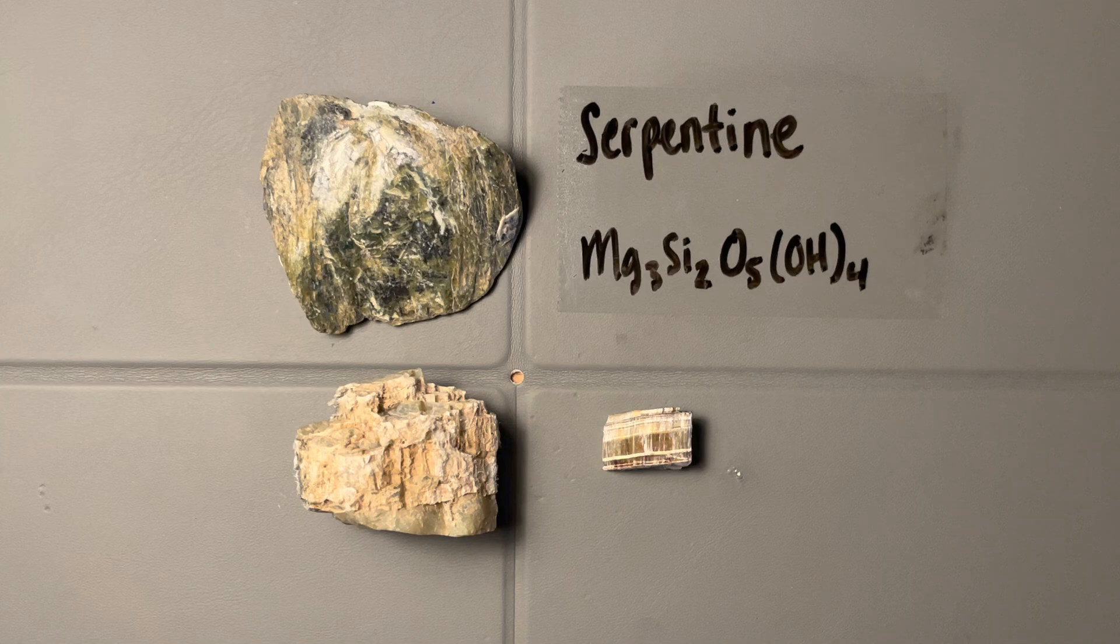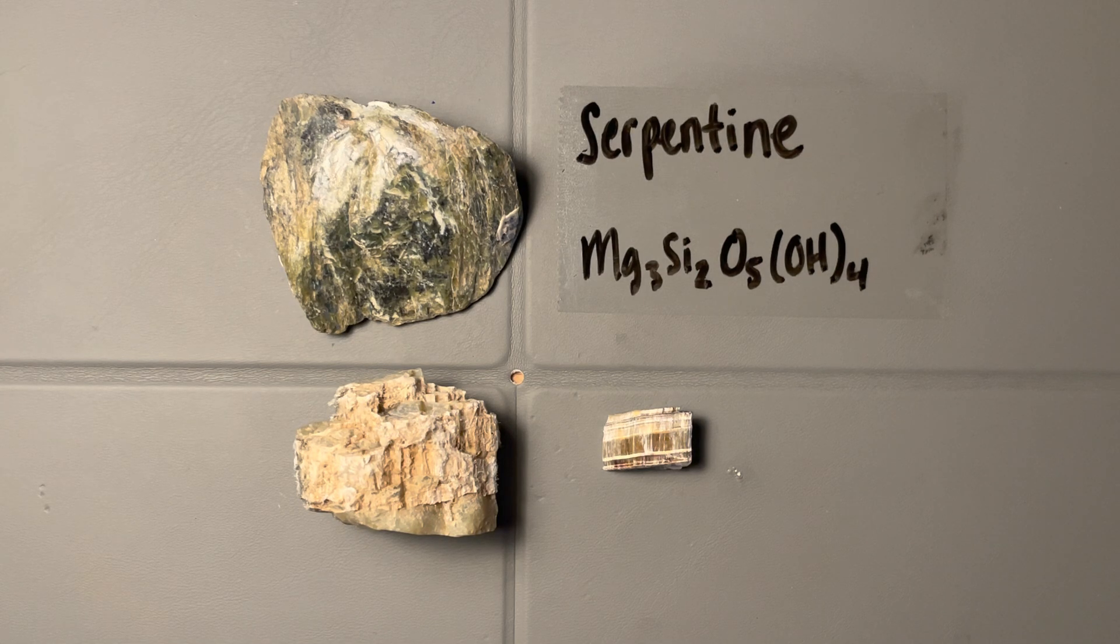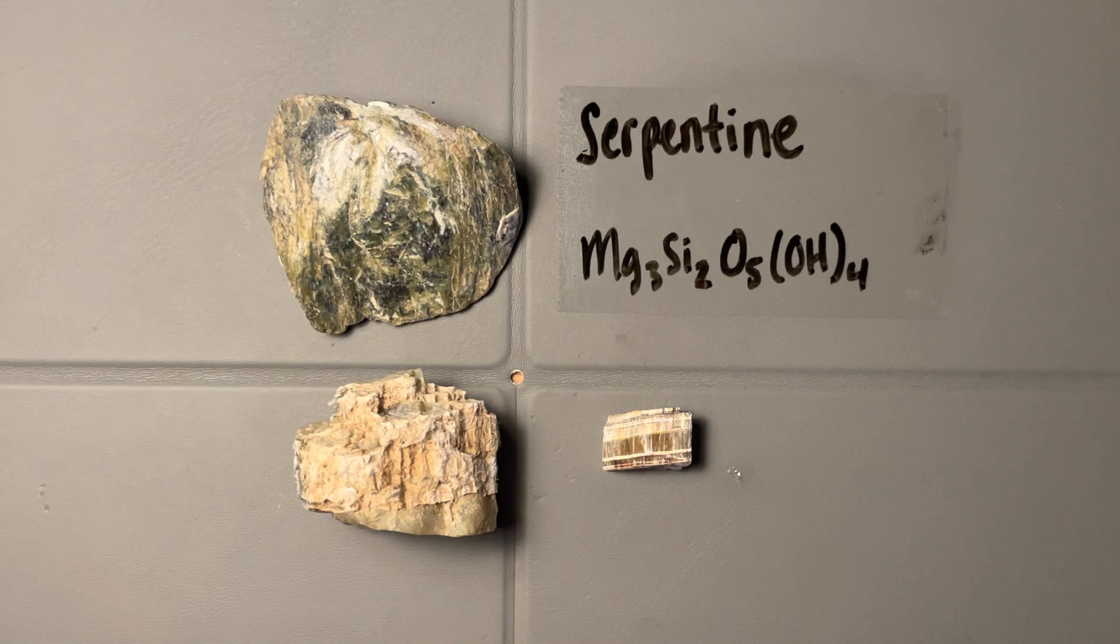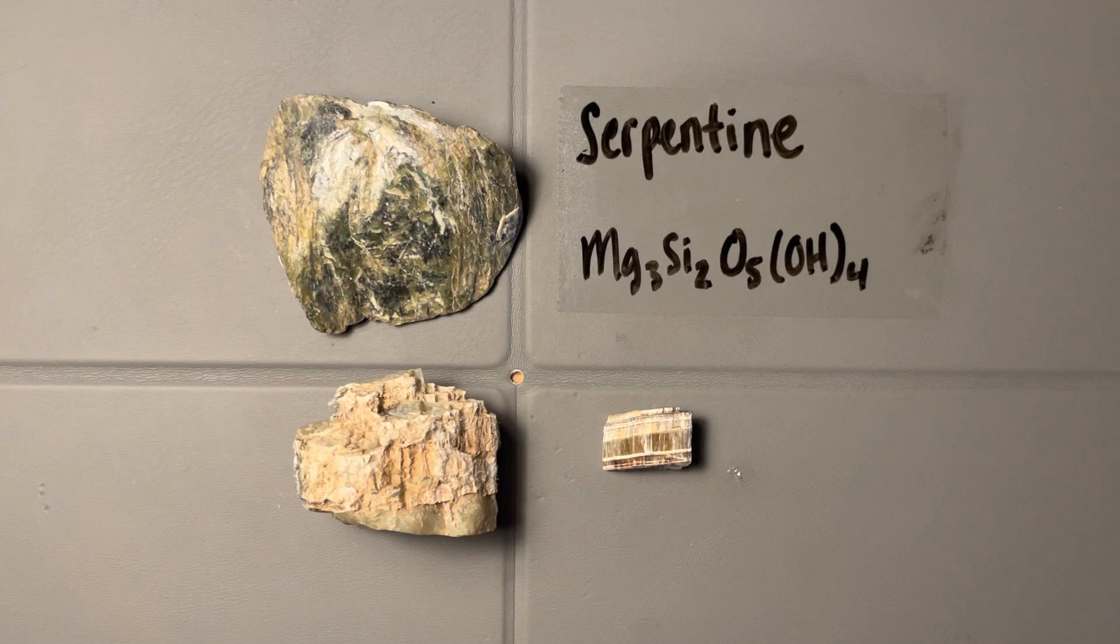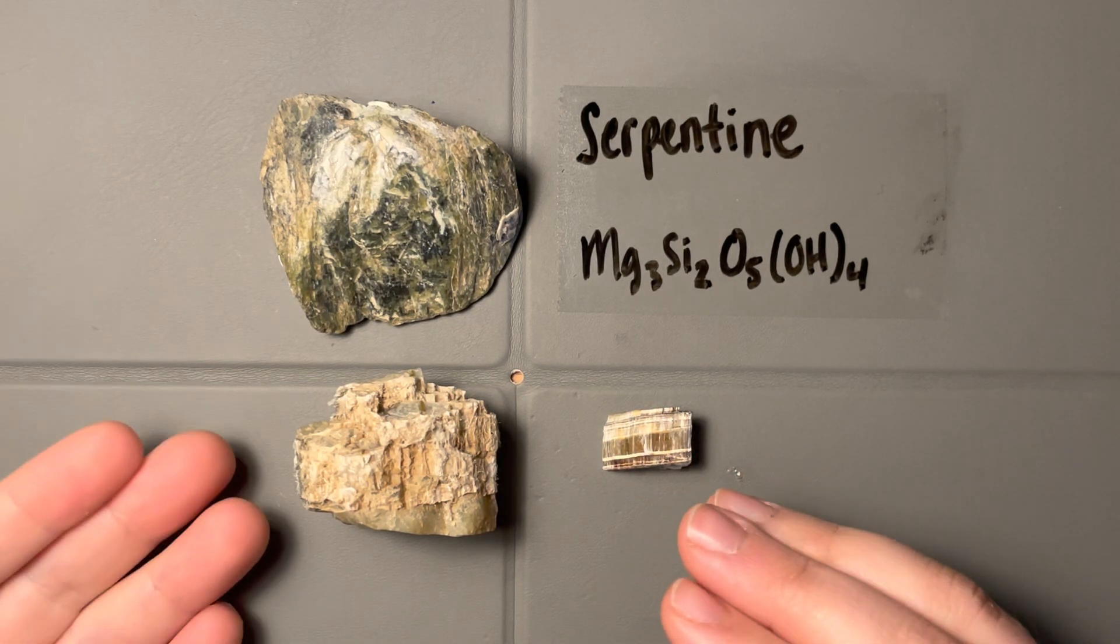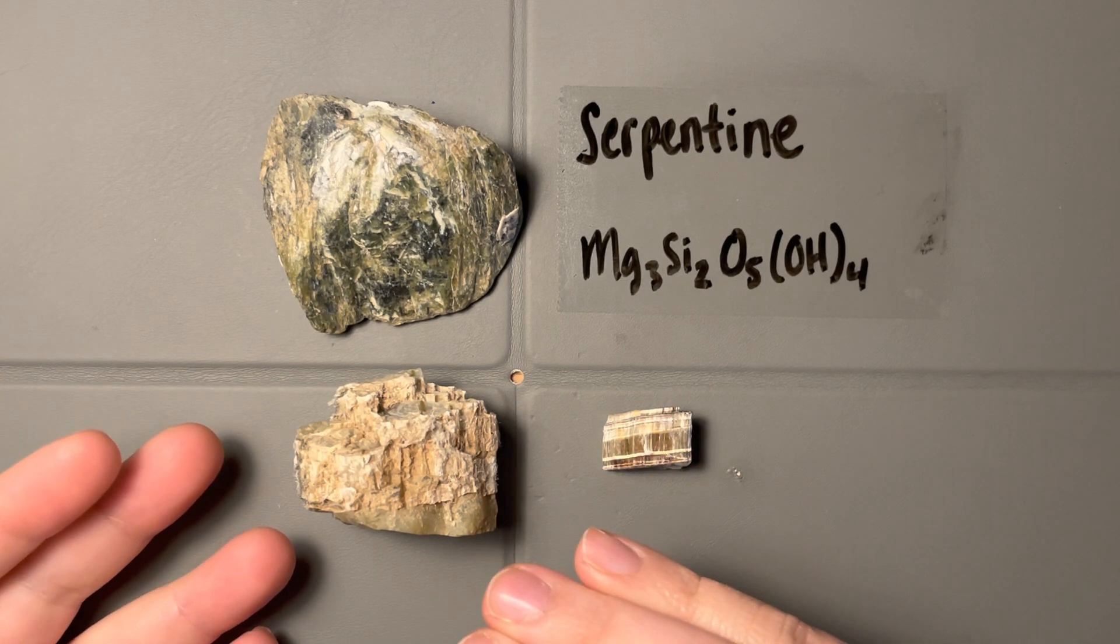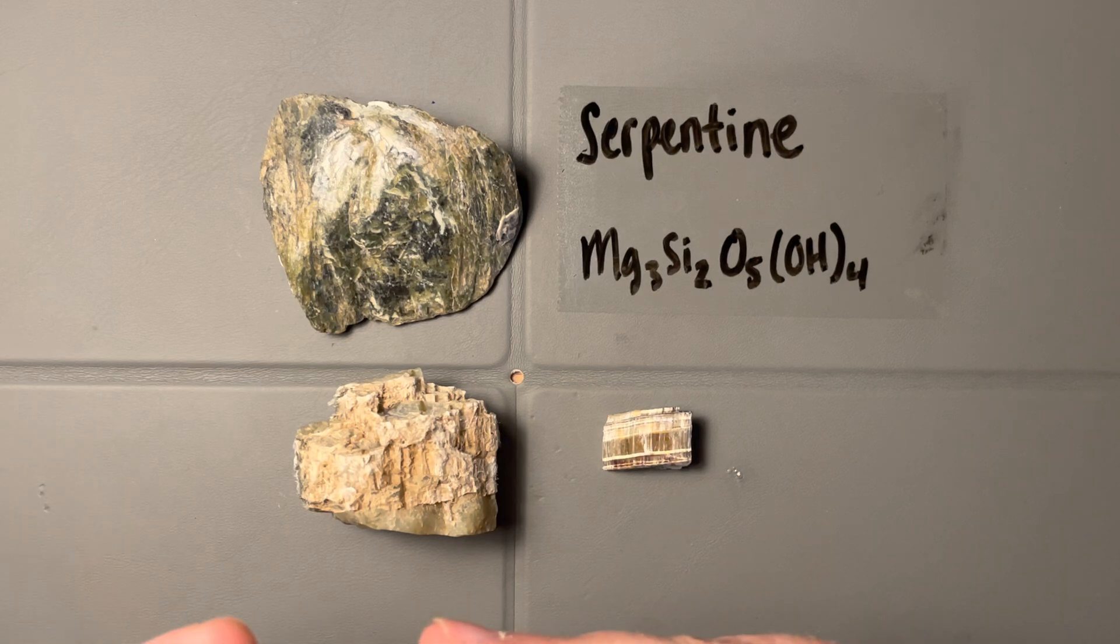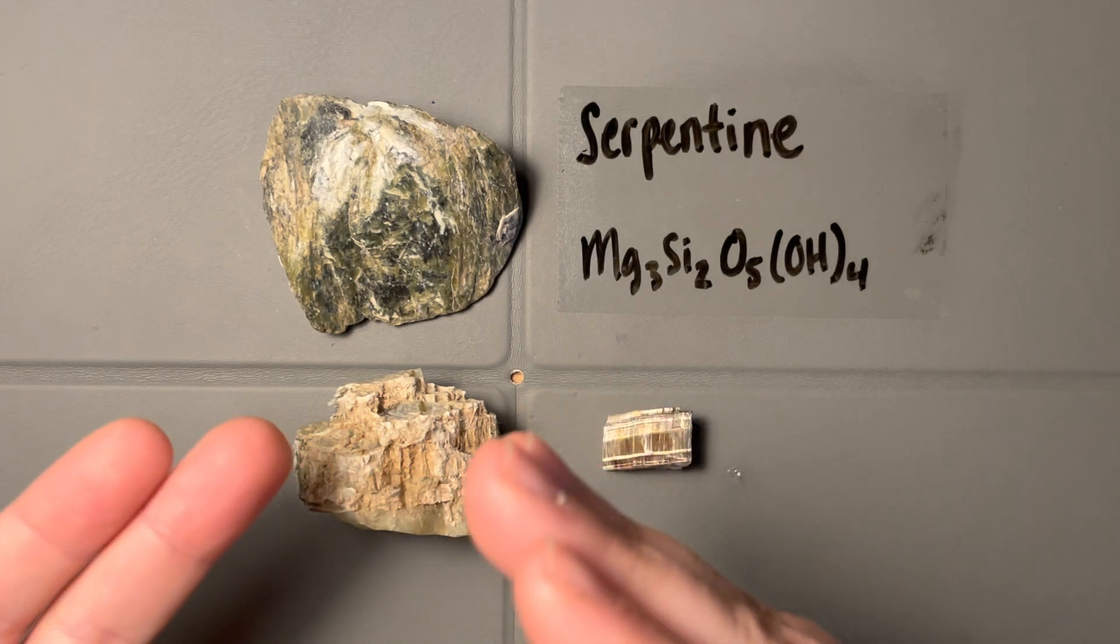The first thing I think of when I think of serpentine is that it's a hydrothermally altered mineral. It goes through a process called serpentinization, and this can happen in a couple different geologic settings. One we talk about most in petrology is where we have a subducting slab of plate.